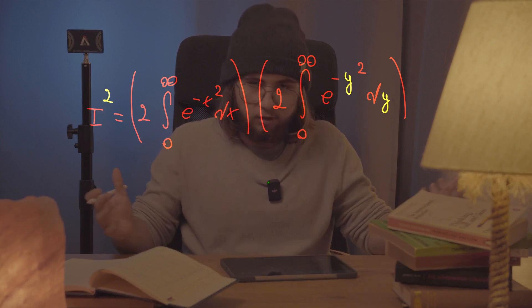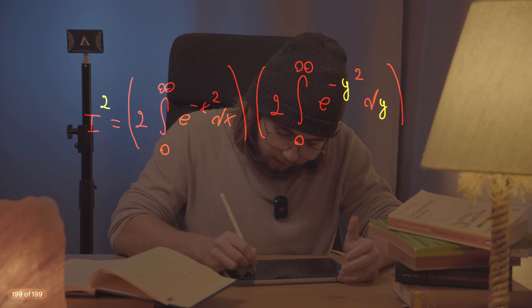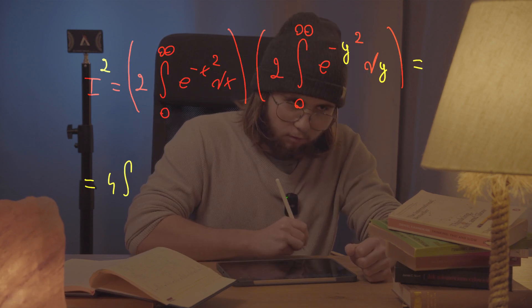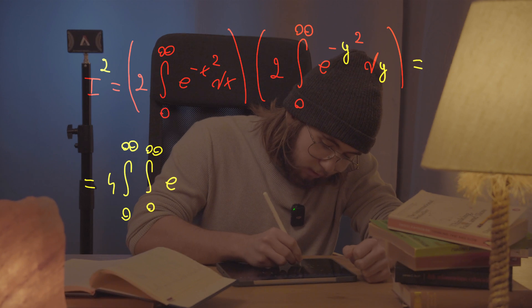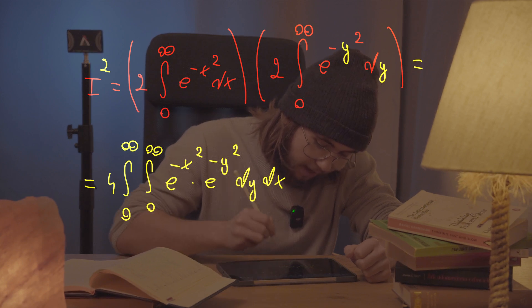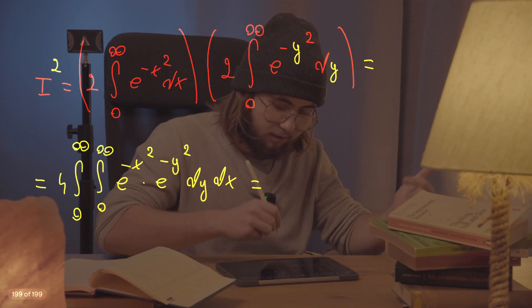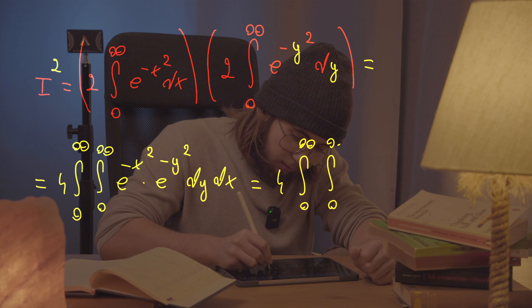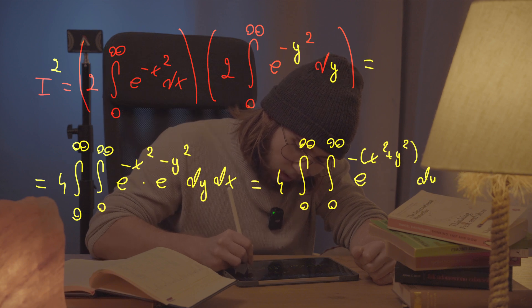Now I can smash those integrals together as in Calc 2, rewriting I squared as four times the double integral from zero to infinity and zero to infinity of e to the negative x squared multiplied by e to the negative y squared dy dx. Multiplying those exponentials together gives four times the double integral of e to the negative (x squared plus y squared) dy dx.